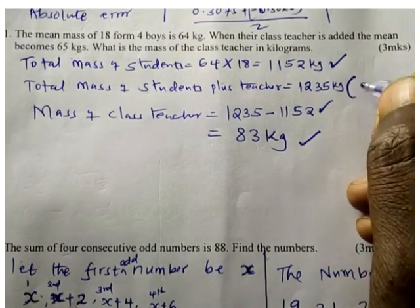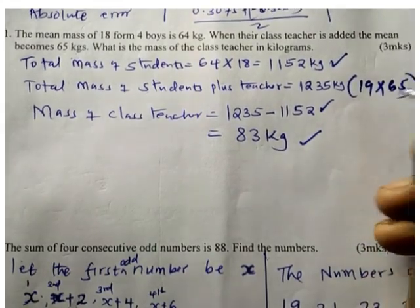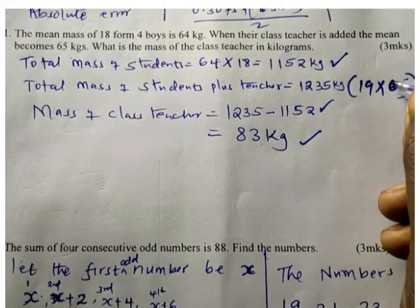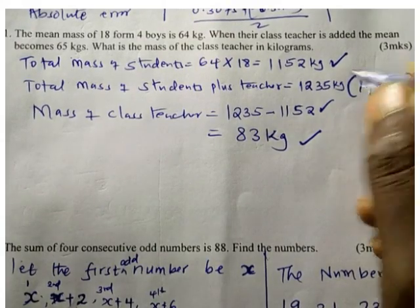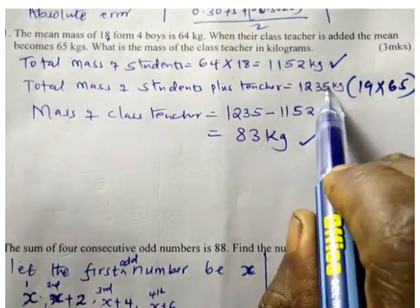So this one is 19 times 65. The average of the students and the teacher is 65—18 plus 1 the teacher will become 19, and this gives you the answer.